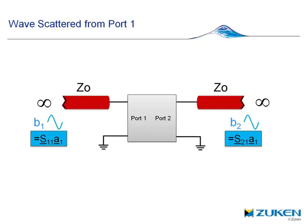This is a symmetrical network, so exactly the same happens when a wave arrives at port 2. Let's see that again in another animation.